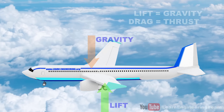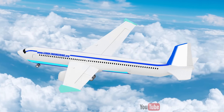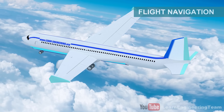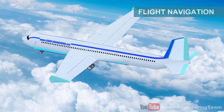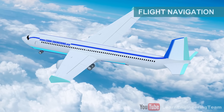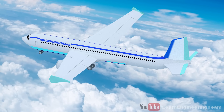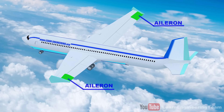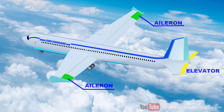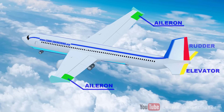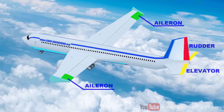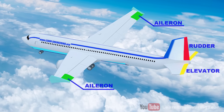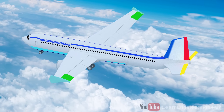Now let's get into the core of flight navigation. You can navigate the airplane the way you want with the help of three different wing attachments: aileron, elevator, and rudder. Pilots use them alone or together depending on the situation.